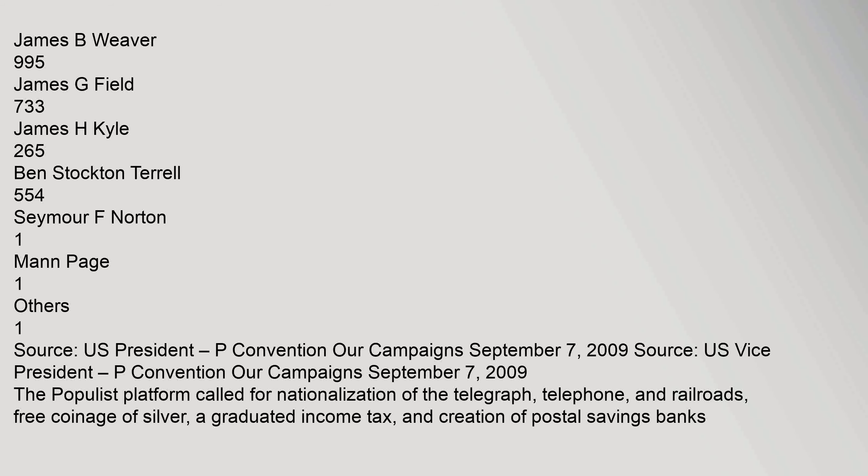The Populist platform called for nationalization of the telegraph, telephone, and railroads; free coinage of silver; a graduated income tax; and creation of postal savings banks.